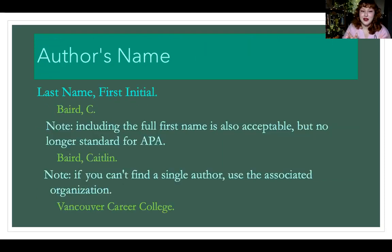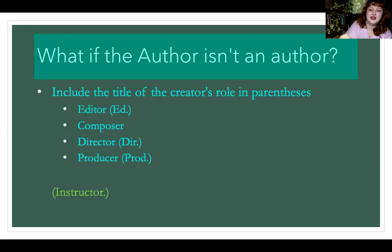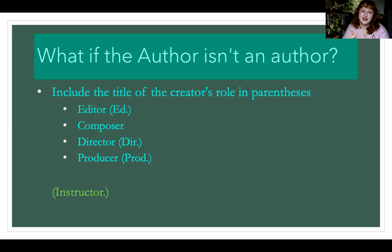Let's make one. First, the author's name: last name, first initial — I'll also accept their full first name, as that was the old APA style and is common in other styles. If you can't find the author, use the associated organization. If there are multiple authors, list them all out. If the author isn't an author — so they do something other than write — you include that role in parentheses after their name: editor, composer, director, producer. Some roles have preset abbreviations.